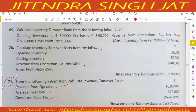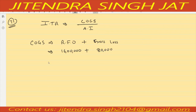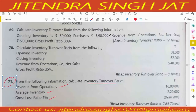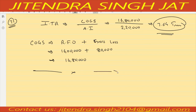Gross loss is 5%. So add 5% of 16 lakh to the revenue from operations to get Cost of Goods Sold. After dividing by average inventory, the inventory turnover ratio comes to 7.64 times.